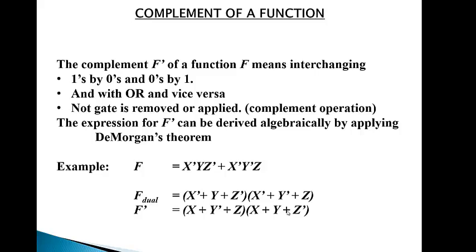First of all, let's go through the definitions. The complement F' of a function F means interchanging 1s by 0s and 0s by 1, and converting AND into OR and OR into AND. You can do it by using De Morgan's theorem.